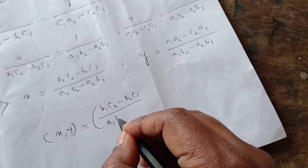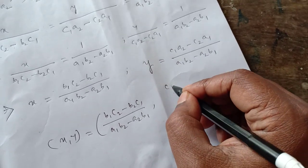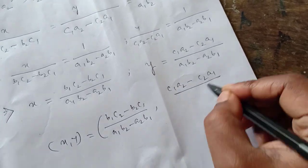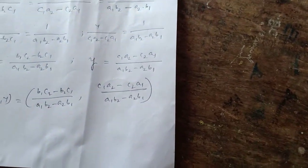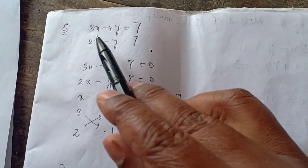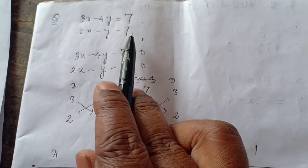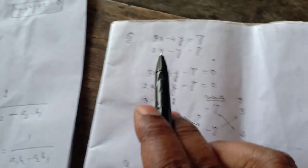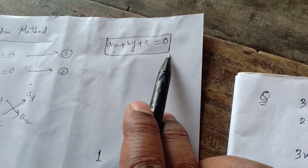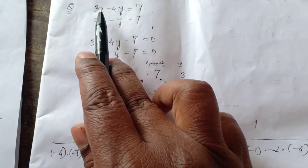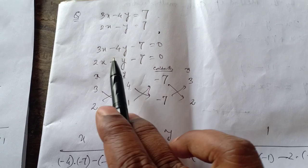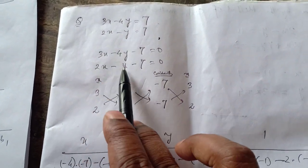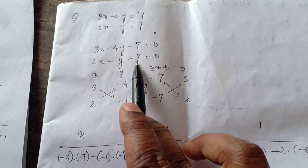Let me explain with the help of an example. Here I am giving you two equations: 3X minus 4Y equal to 7, and 2X minus Y equal to 7. Firstly, we have to convert the equations into the standard form AX plus BY plus C equals 0. So the first equation becomes 3X minus 4Y minus 7 equals 0, and the second equation becomes 2X minus Y minus 7 equals 0.